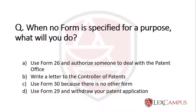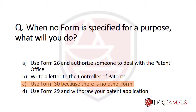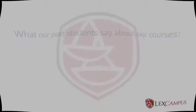C. Use Form 30 because there is no other form. D. Use Form 29 and withdraw your patent application. The answer is C — use Form 30 because there is no other form.